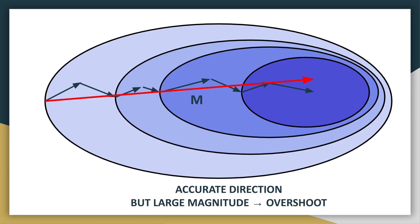There is one problem with directly summing all the gradients: the net vector points accurately toward the global minima but is very large in magnitude. As we keep iterating, this magnitude keeps increasing since we are aggregating gradients each iteration. As we get closer to the global minima, we will overshoot it and never converge — we'll keep oscillating. So we need to introduce some kind of friction so that the magnitude can be reduced with iterations.